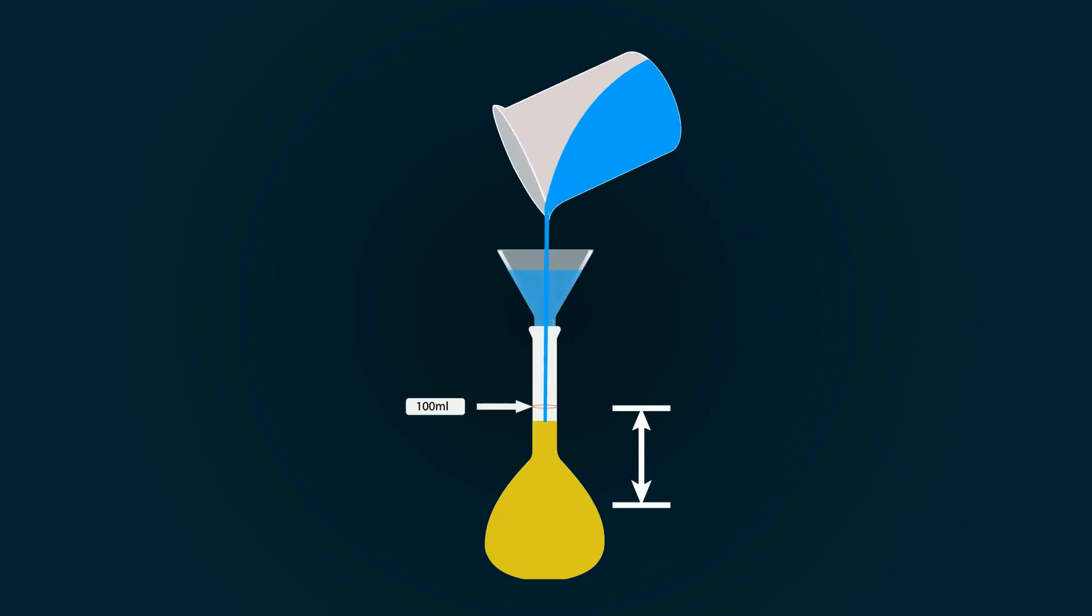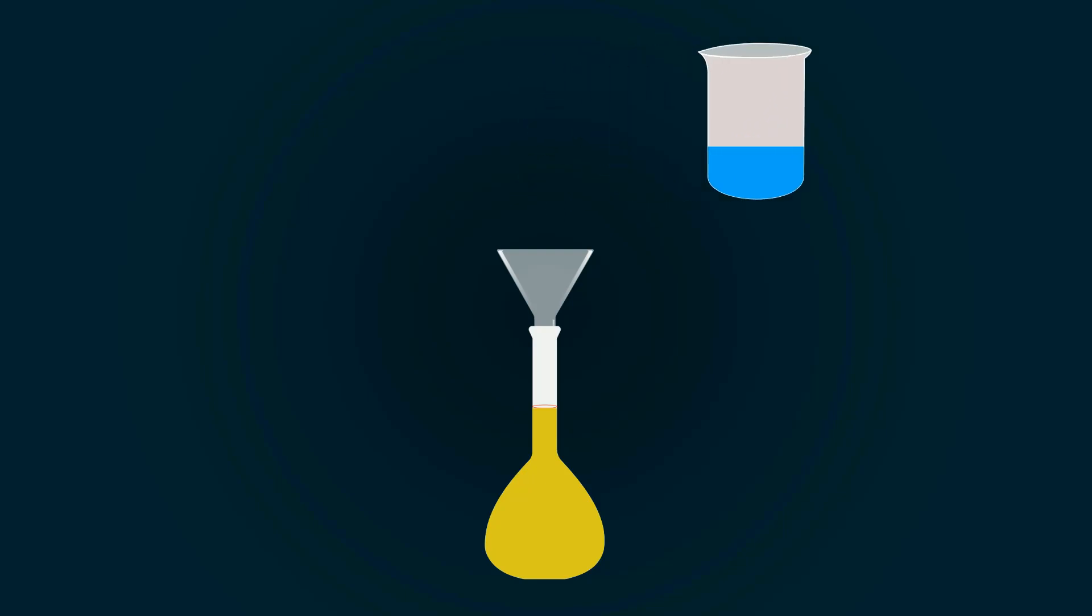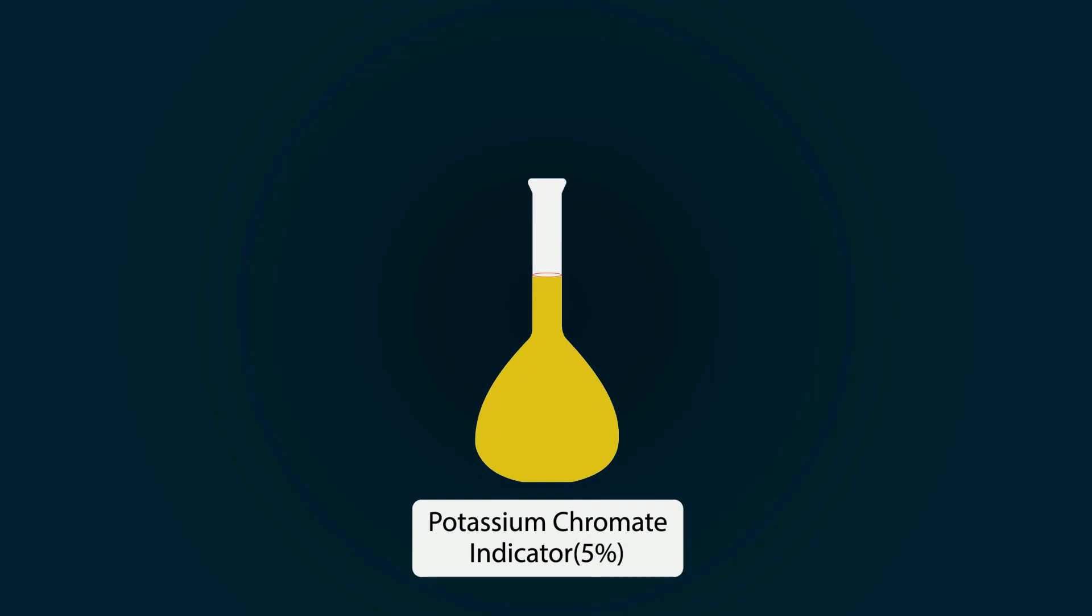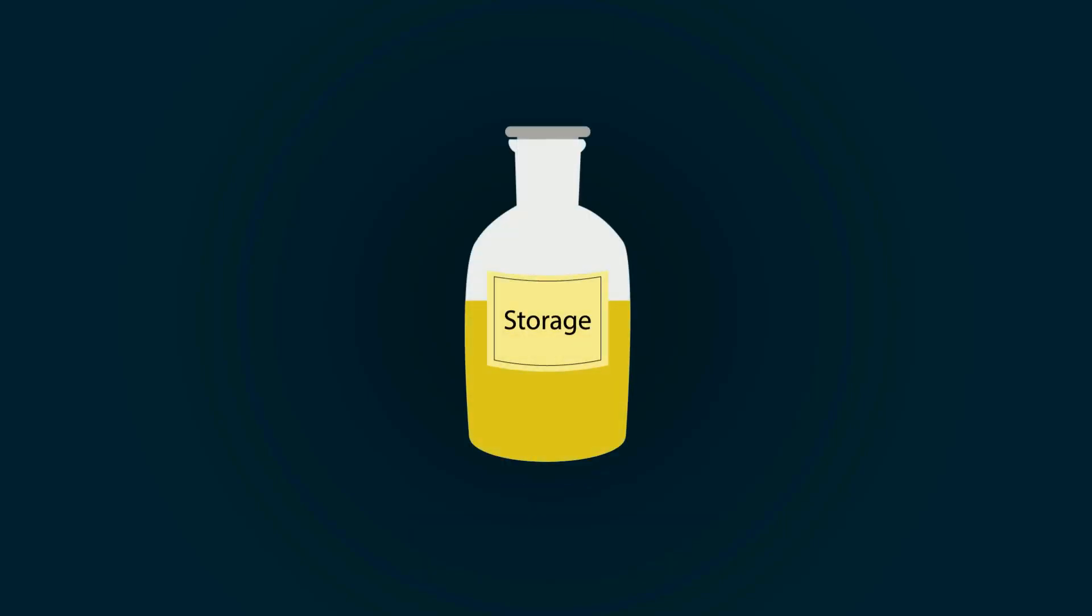You have successfully prepared 5 percent weight by volume potassium chromate indicator. You can store it in any bottle you want and use it according to your needs.